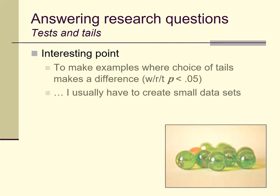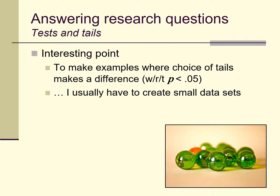In creating this mini-lecture and coming up with this example, in order to create a situation where the decision about using a one-tailed versus two-tailed test would yield two different outcomes in terms of interpreting the test statistic, I had to use a very small set of data. You saw that I had only ten people — five in each group — which is a pretty small dataset, especially for an independent design. I did that deliberately so that my analyses would work out with a one-tailed test but not with a two-tailed test.